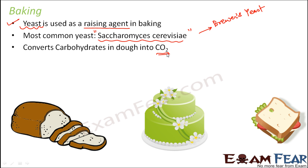If you look at any cake, you would have noticed the texture — it is very soft and spongy. In the recipe of bakery items, especially cakes, eggs and sugar are often used. Why? Because eggs and sugar accelerate the growth of yeast. More yeast means more conversion of carbohydrates into carbon dioxide, making the dough more fluffy, and as a result, the baked item becomes more soft and spongy. That is the purpose of adding eggs or sugar in a cake recipe.